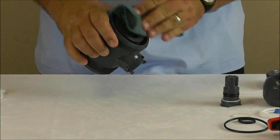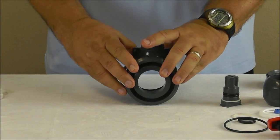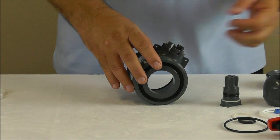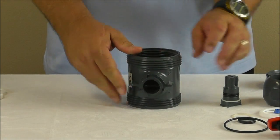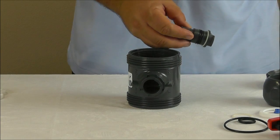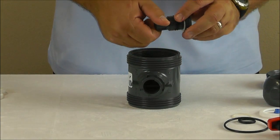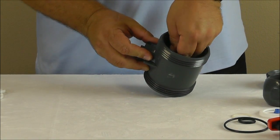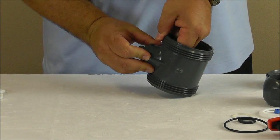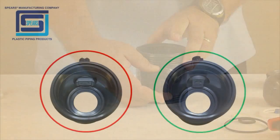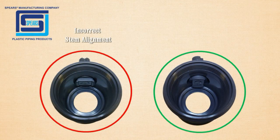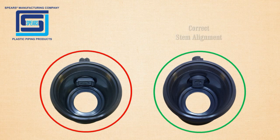Clean the valve body and lubricate the stem port and stem o-rings. Reinstall the stem from the inside of the valve body. Make sure the stem is properly aligned to reinsert the ball.